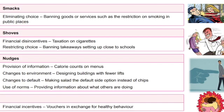A smack is at the very top of the spectrum in terms of eliminating choice. For example, age restrictions — such as not being able to buy cigarettes until the age of 18, or alcohol until the age of 21 in America — completely eliminate that choice for people below that age.